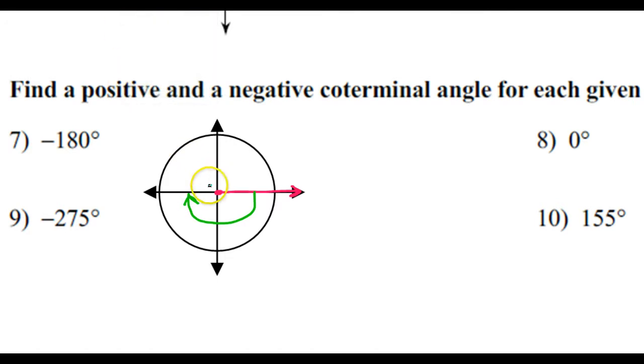So, the terminal side of our angle is going to be over here. So this is what negative 180 degrees looks like.